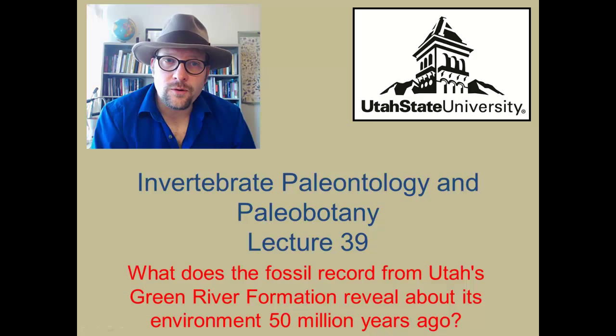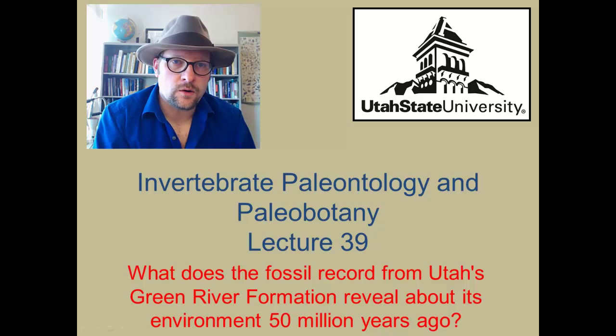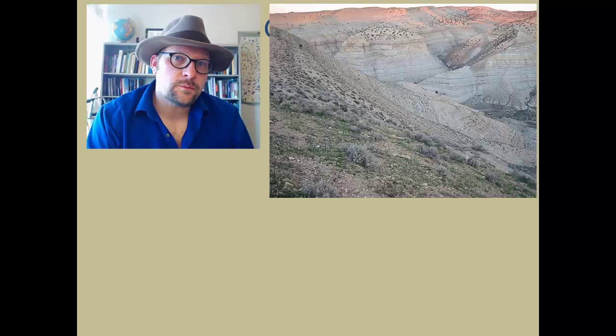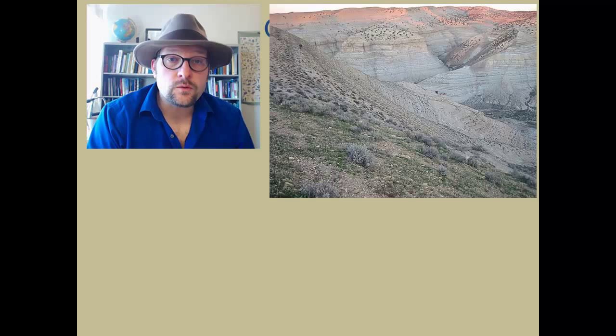We will use these fossils to reconstruct the environment 50 million years ago during the Middle Eocene here in North America. The Green River Formation is exposed in the tri-state region of Utah, Wyoming, and western Colorado. It is a layer of thickly stacked shales and sandstones exposed throughout the canyon lands of northeastern Utah, western Colorado, as well as a region near the type section in Green River, Wyoming.